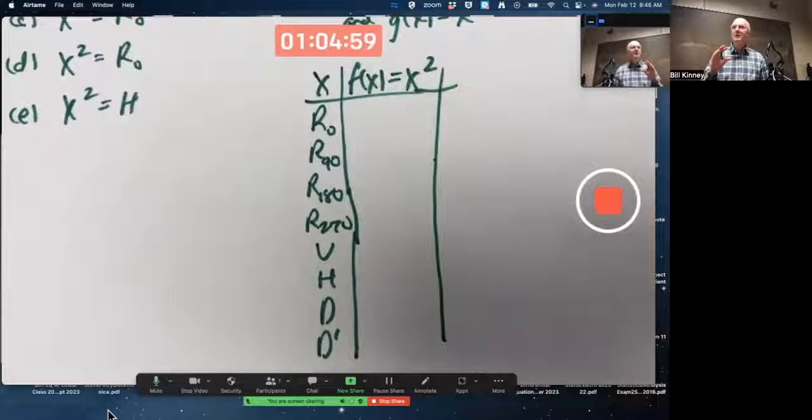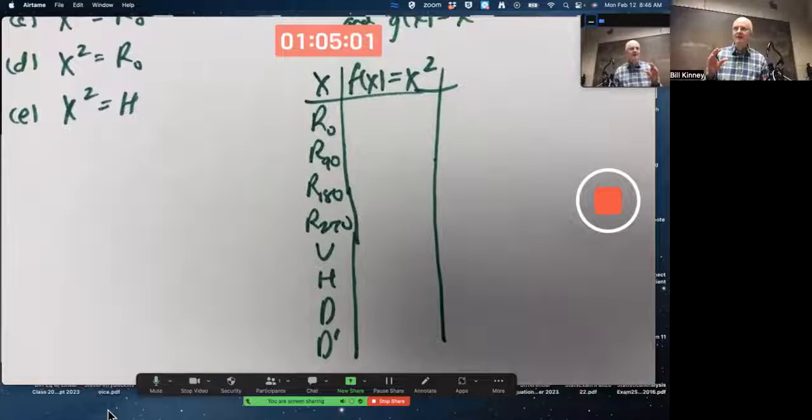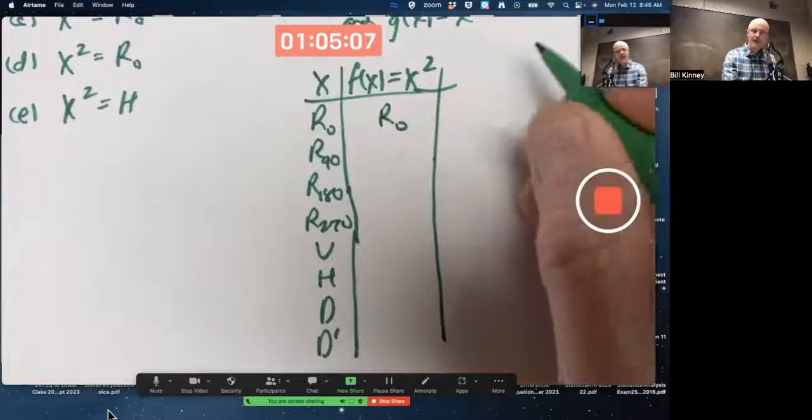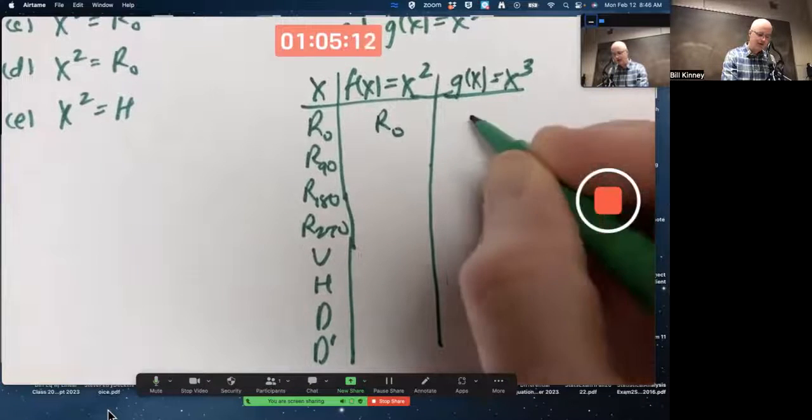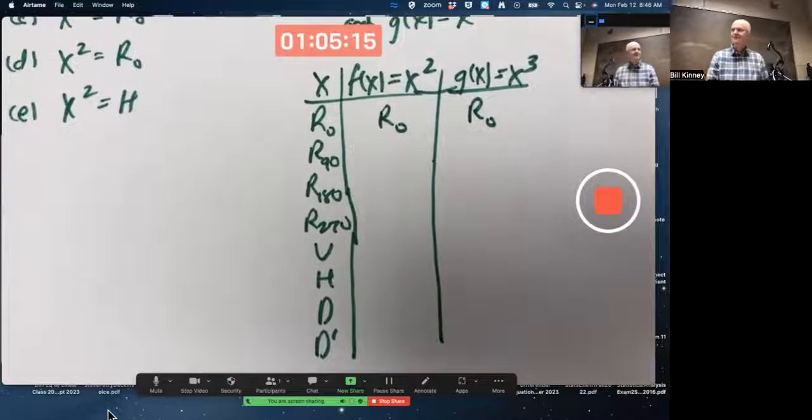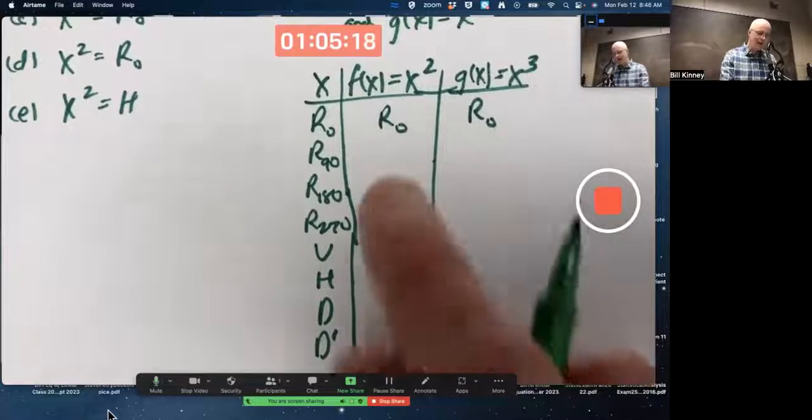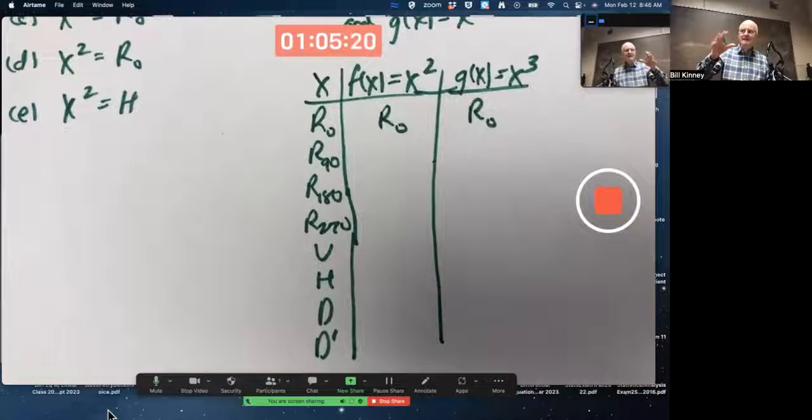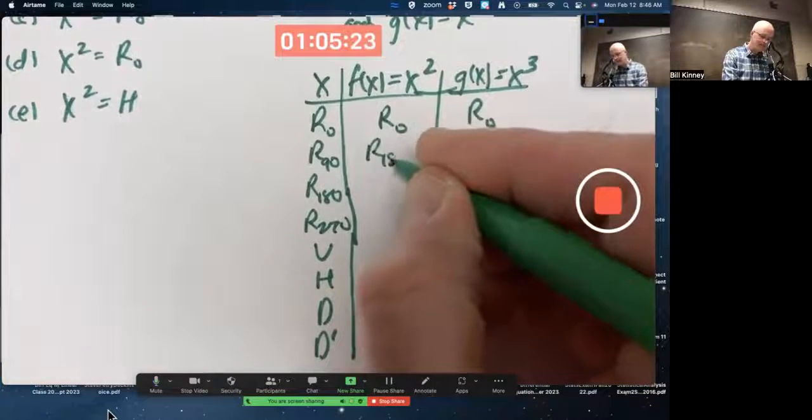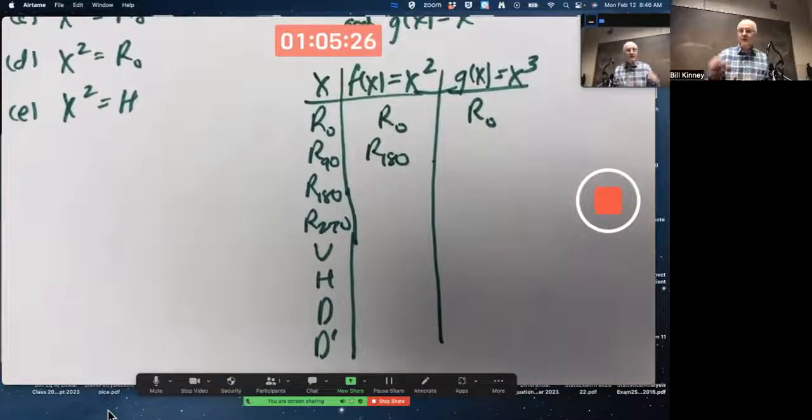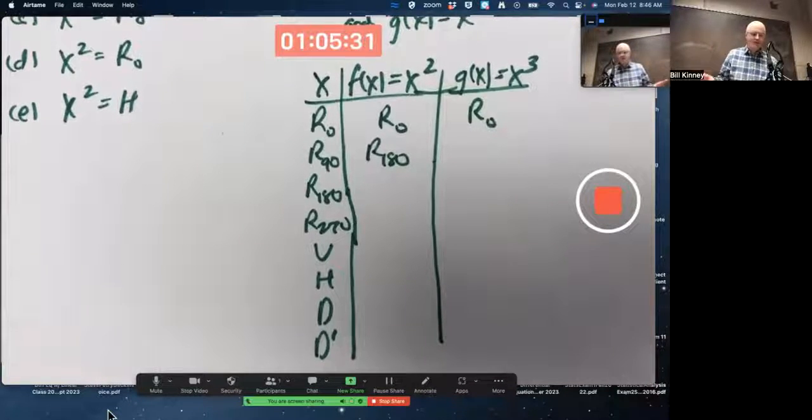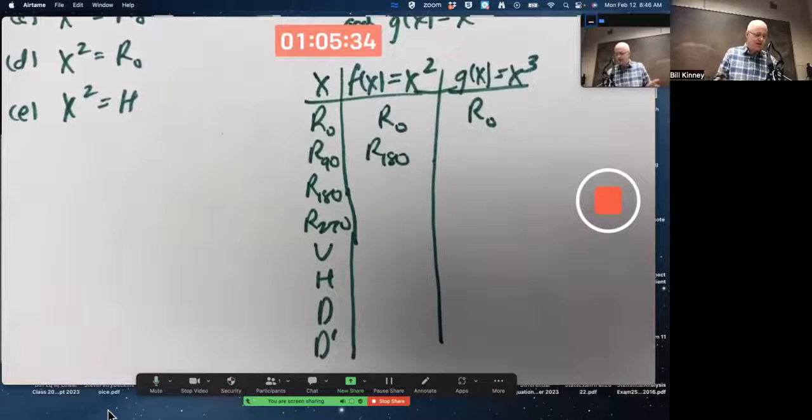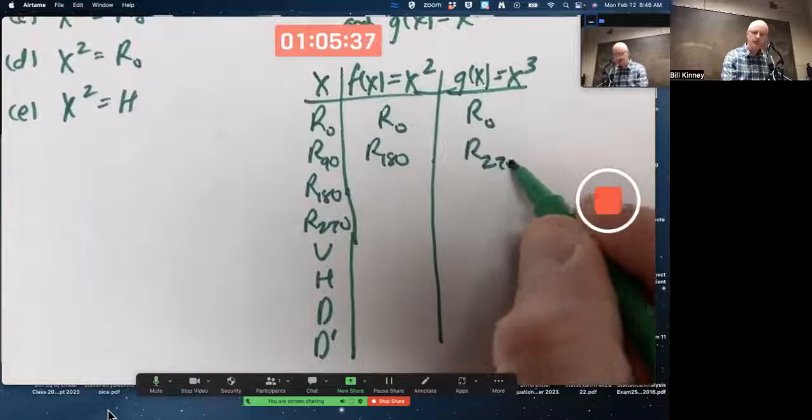What are the function values of F of X equals X squared? I got to square each of these things. Let's try to do it without looking at the Cayley table. R0, the do-nothing rotation, when you square it, you still do nothing. If you do nothing twice, then you've done nothing overall. Actually, R0 to any power will be itself. R90, when you square it, rotate by 90 degrees then another 90, that's R180. When you cube it, because I'm doing both functions at once here, do a 90 rotation three times, you've done a 270 degree rotation, counterclockwise.